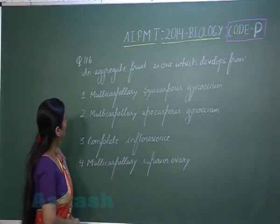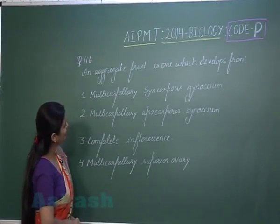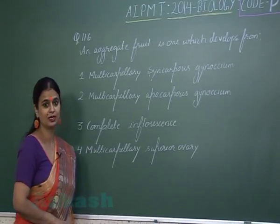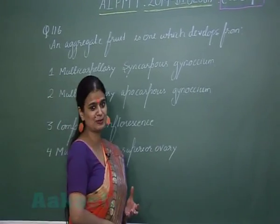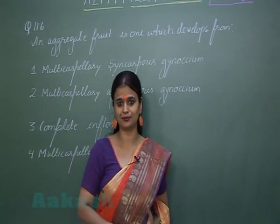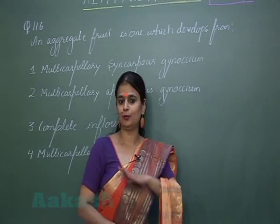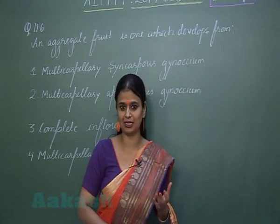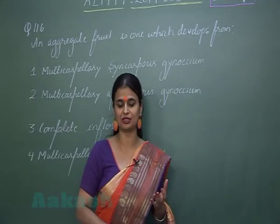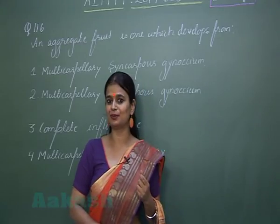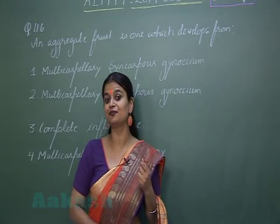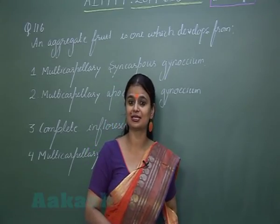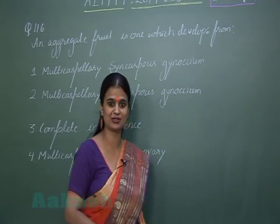In question number 116, an aggregate fruit is one which develops from a single flower in which there is presence of several carpels — a multicarpellary condition — and all the carpels are free. When all the carpels are free, you call it the apocarpous condition.